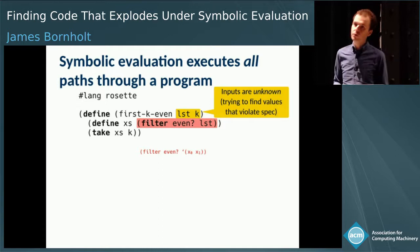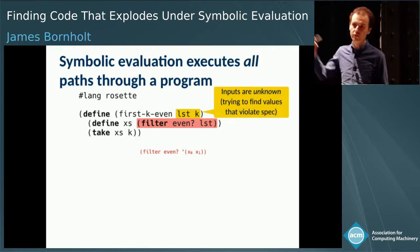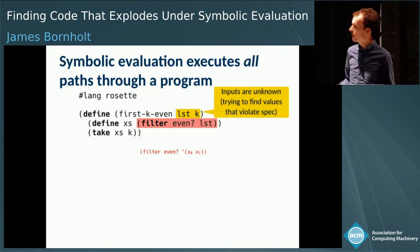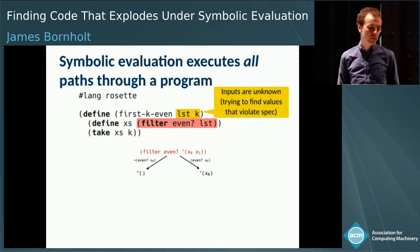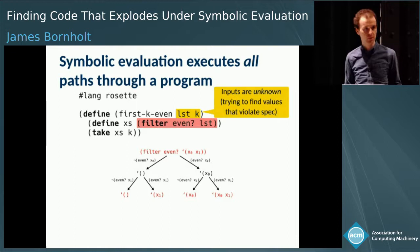When we don't know the inputs, we have to run all possible paths through the function. Imagine we're executing the filter statement with an input list of two numbers whose values we don't know, and we also don't know k. We don't know whether x0 is even, so we have to fork into two paths: one where x0 is not even and one where it is. We have to do the same for x1, so at the end of running filter we have four different paths, four different return values.